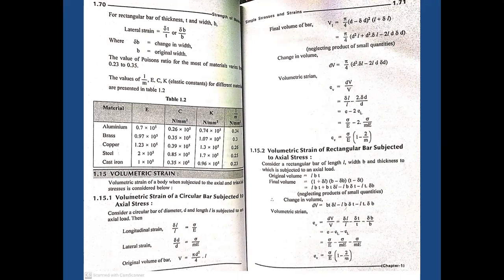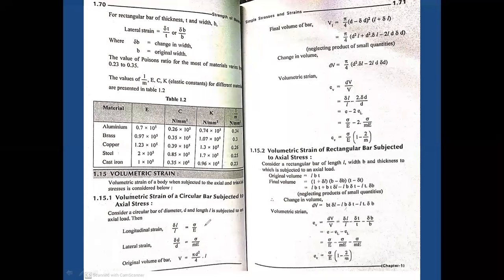Now, volumetric strain of a circular bar subjected to axial stresses. The longitudinal unit strain equals delta L by L, which equals sigma by E, where delta L is the change in length. The lateral strain equals delta d by d, which equals (1/m) × (sigma/E).